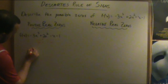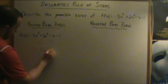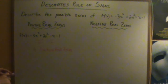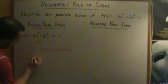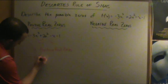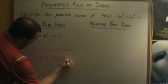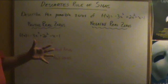So this function f of x changes signs twice, meaning there are two positive real zeros. We can subtract even numbers from this count until we get to zero: two minus two is zero, so there could also be zero positive real zeros. Those are the only two possibilities. If the function changed signs five times, then there would be five, three, or one possible positive real zeros.